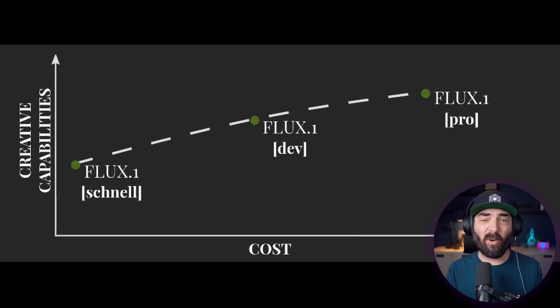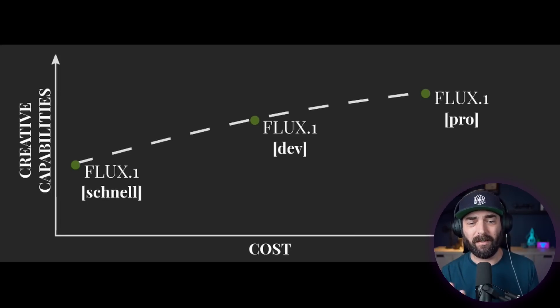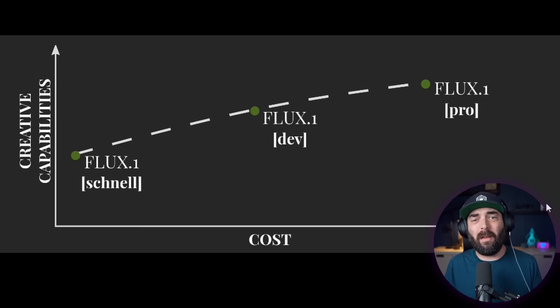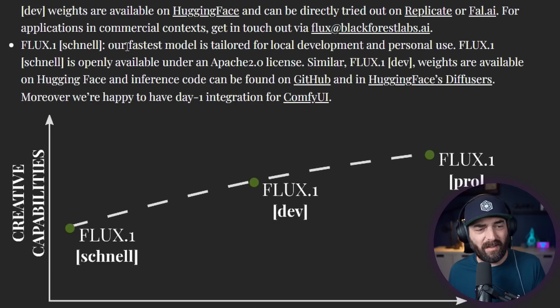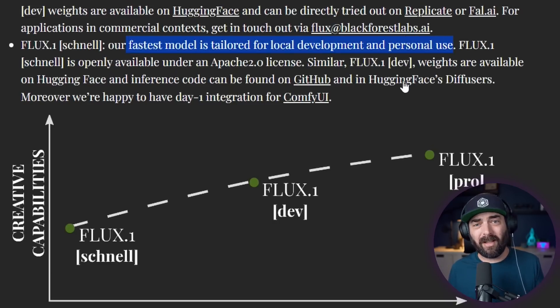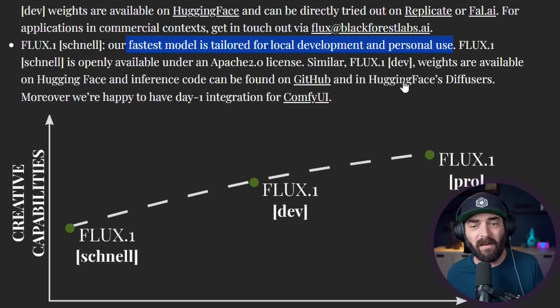There are three models on Flux, and each one is a little bit more powerful but also a little bit more expensive to use than the last. There is Flux One Schnell, which is the fastest model and is designed for local development and personal use — most likely the model you'll run on a home computer. This model is also openly available under the Apache 2.0 license, so it is open source. Any tools you create using Flux One Schnell can be sold, and any images generated can be used commercially or non-commercially, however you want.